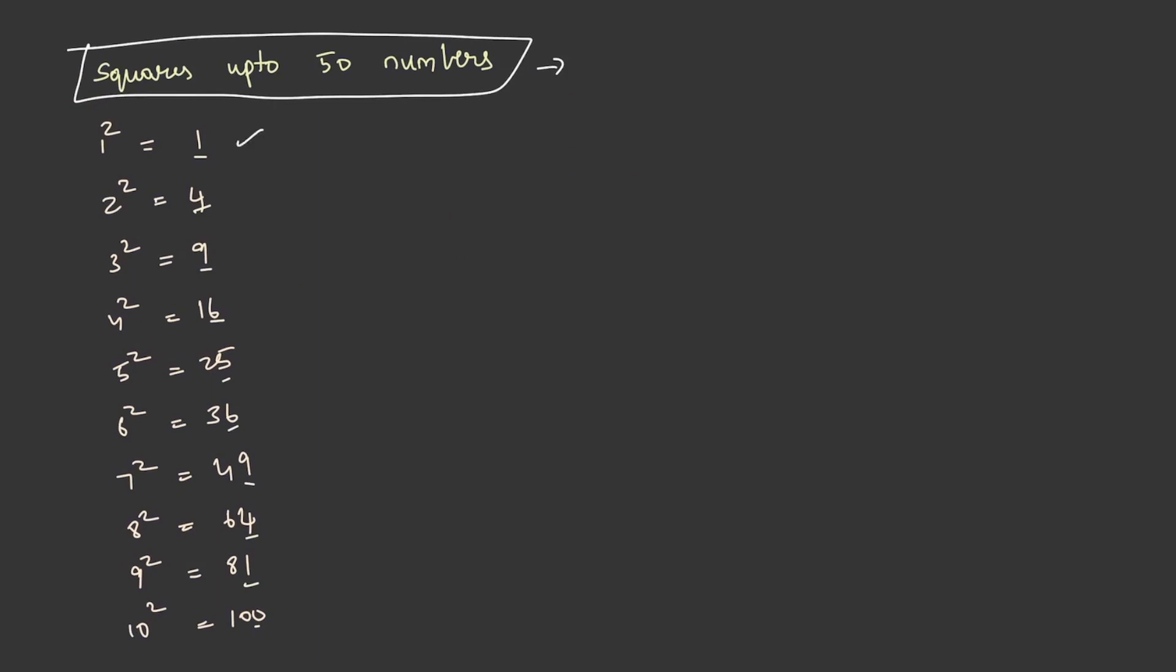Here you can observe, I have given squares of 1 to 10 natural numbers. If you can look at the units digit of every term here, you can observe a similarity. That is, for square of 1 and 9, the units digit is 1. Similarly, for 2 and 8 it is 4, and for 3 and 7 it is 9, for 4 and 6 is 6.